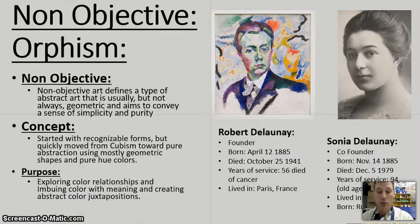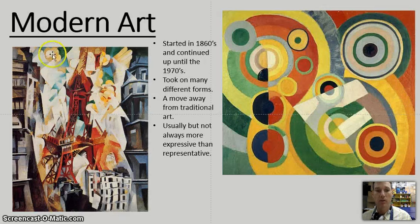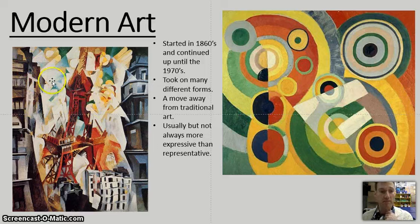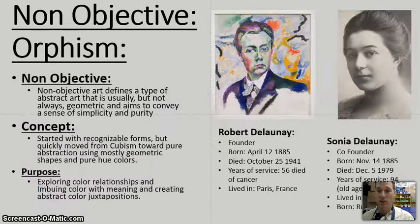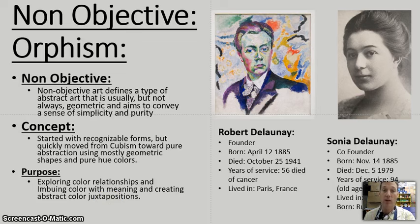As we moved on to non-objectivism or orphism, Robert Delaney — the painter that we're going to be studying in this unit — tried to make non-objective paintings. It was abstract and usually got its idea from abstraction, but then got to a simpler state using just geometric forms, and tried to convey a feeling of simplicity. If we move back to our first slide, this one Robert Delaney did earlier in his career, and you can clearly see the Eiffel Tower set against the Parisian backdrop. But these shapes are very cubistic in the way that they're represented, whereas his later work was simpler and just focused on the geometric shapes. The concept was to start with recognizable forms, but quickly move from that cubist manner towards pure abstraction, exploring color relationships and imbuing color with meaning and creating abstract color juxtapositions.